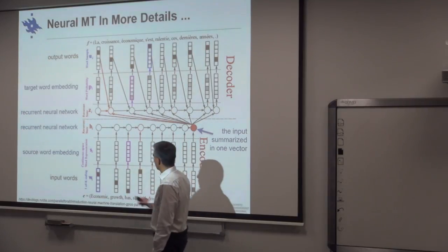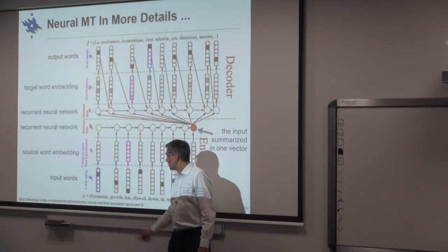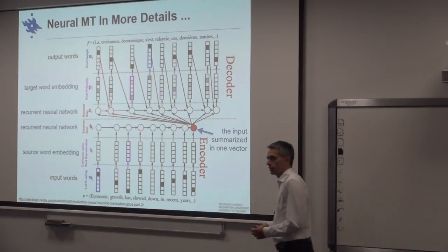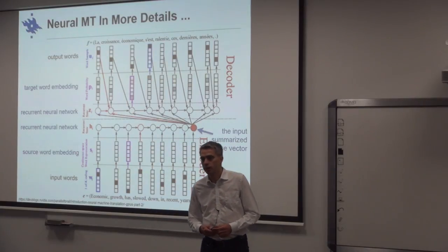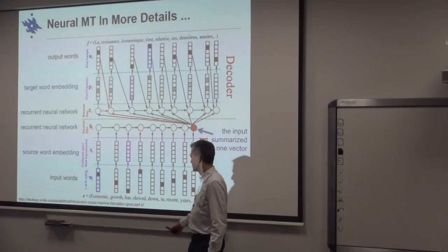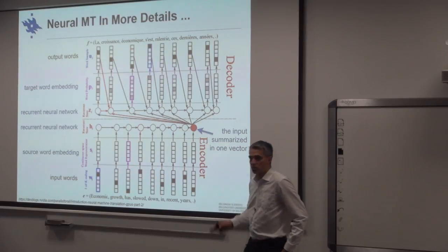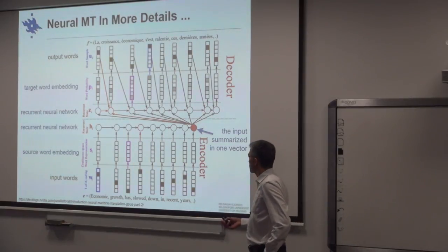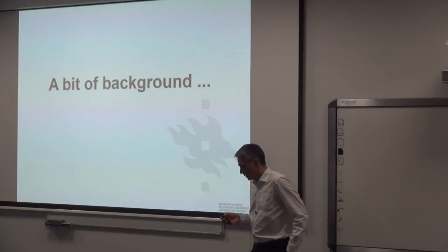The model uses a recurrent network that summarizes the information and then tries to unroll it. This picture comes from a nice tutorial on neural machine translation by Kyunghyun Cho — there are three parts with explanations of all these different components. At the end I have some more links about other types of information you can look at.